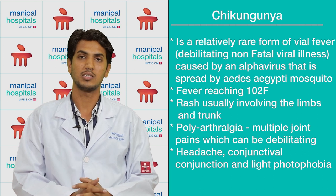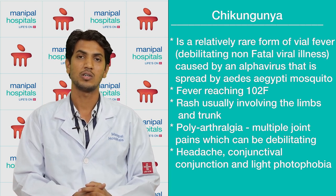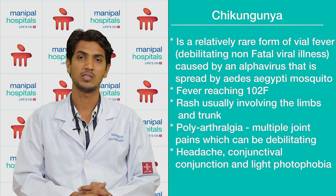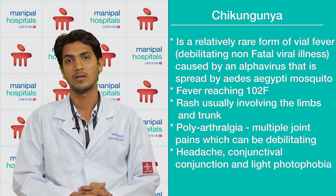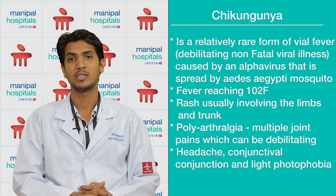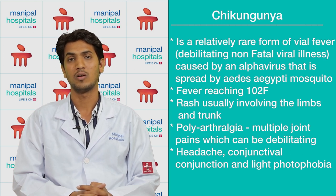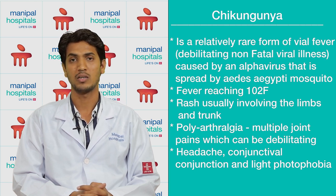Chikungunya is a viral disease affecting all the joints. It starts with high-grade fever around 101 to 102 degrees, and the patient develops joint pains involving small and large joints of the body. It is a very debilitating disease; the joint pains can run for months and sometimes do not subside even with painkillers.